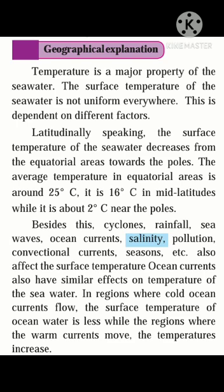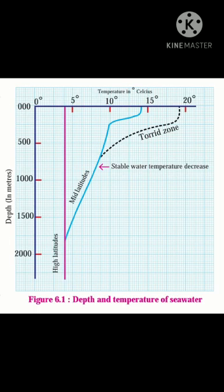Most of the sun's rays radiate back from the surface of the sea, and some penetrate to a certain depth in the water. The intensity of sun rays decreases, so beyond a certain depth the temperature remains the same everywhere. After a depth of 2000 meters, the temperature of seawater remains uniform at 4 degrees Celsius from the equatorial regions to the polar areas.